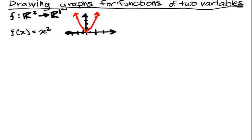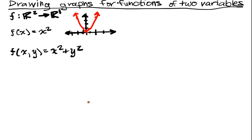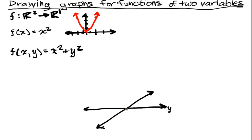This idea extends into higher dimensions. Let's think about drawing a parabolic sheet for f(x,y) = x² + y². We're going to draw skeletons, and the skeleton should consist of parabolas. The first thing we do is draw a coordinate axis — here's my x-axis, my y-axis, and this is f(x,y).